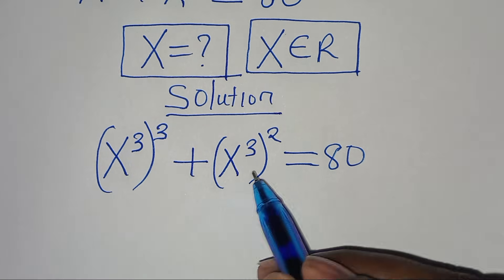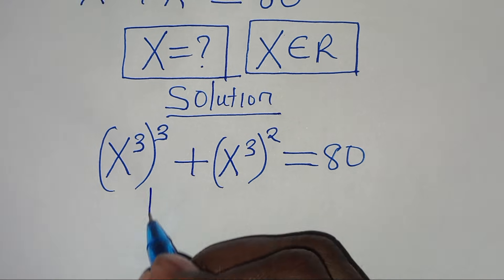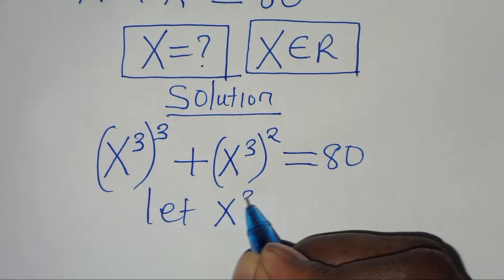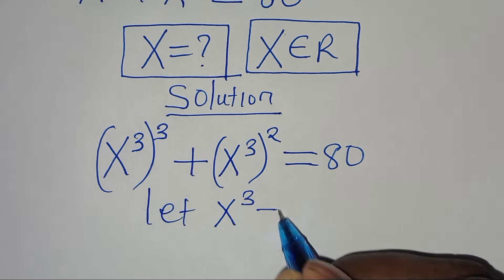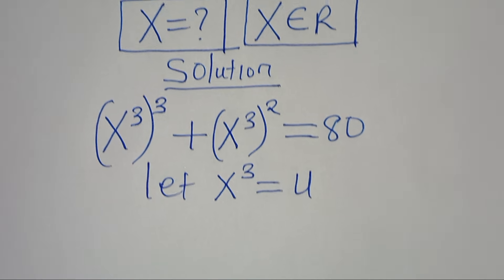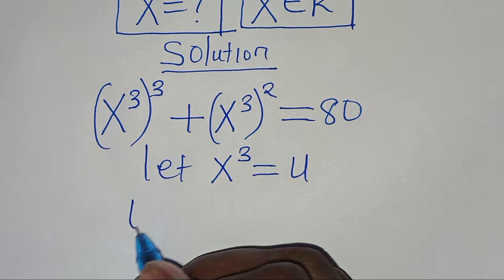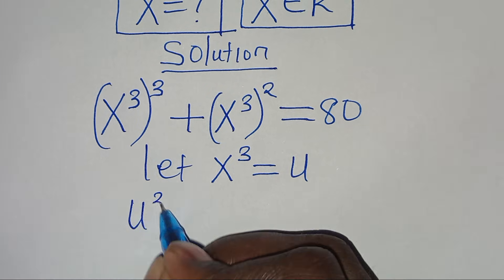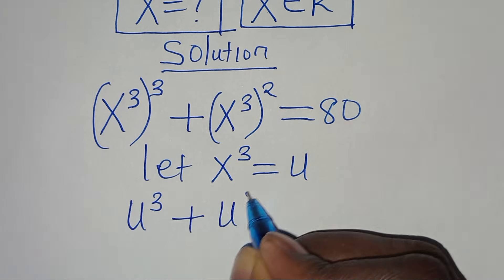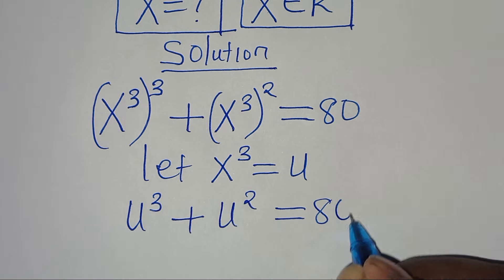Since x to the power of 3 is common here, we can let x to the power of 3 be equal to u. Substituting u, this means we have u to the power of 3 plus u to the power of 2, and this is equal to 80.